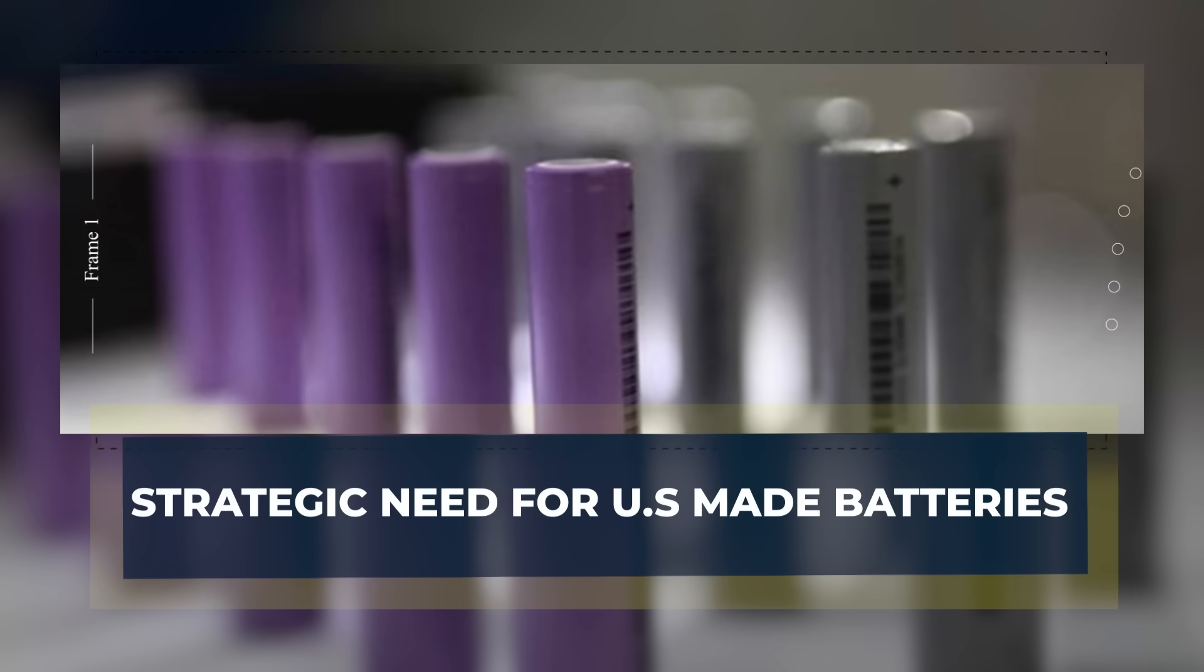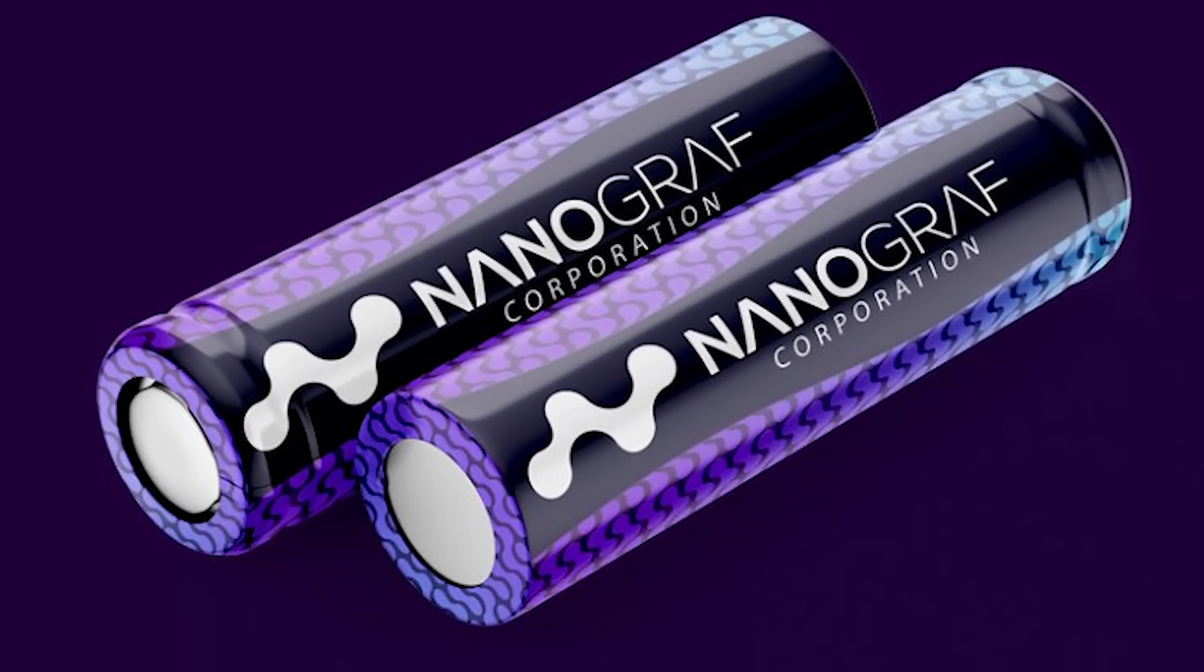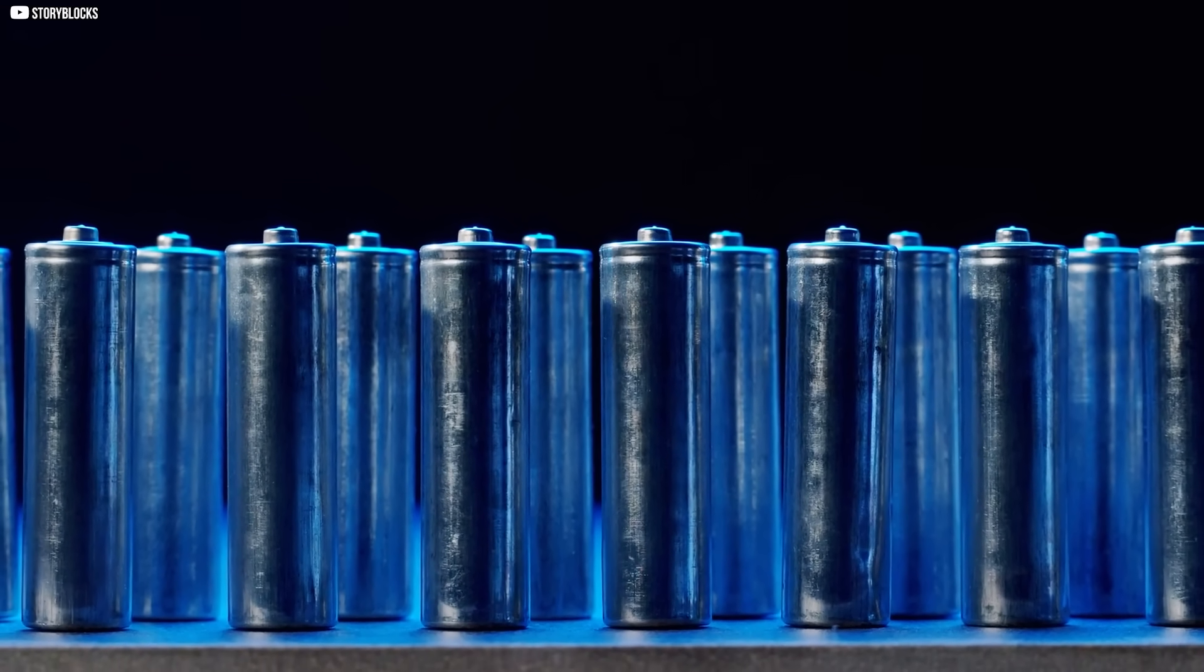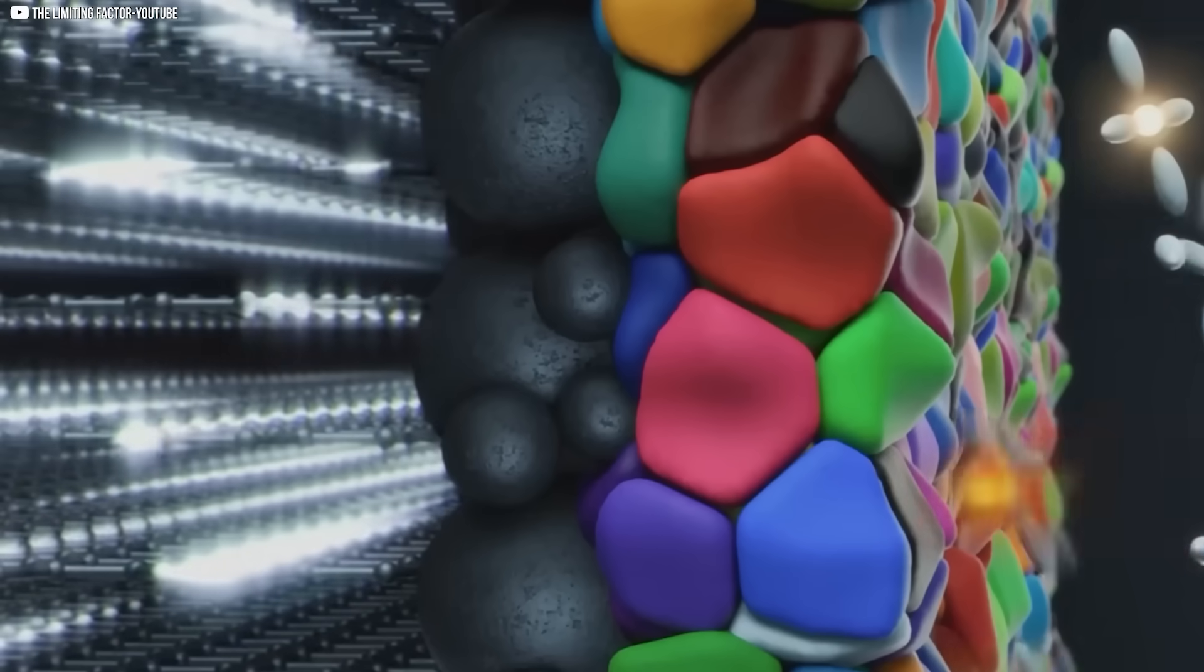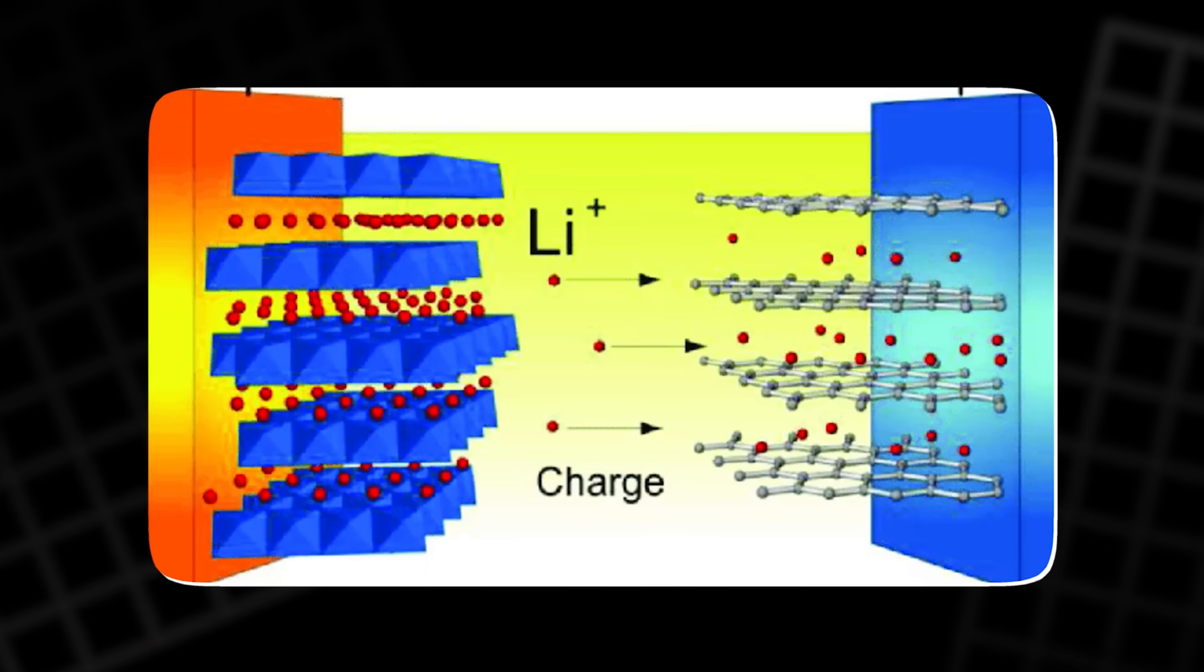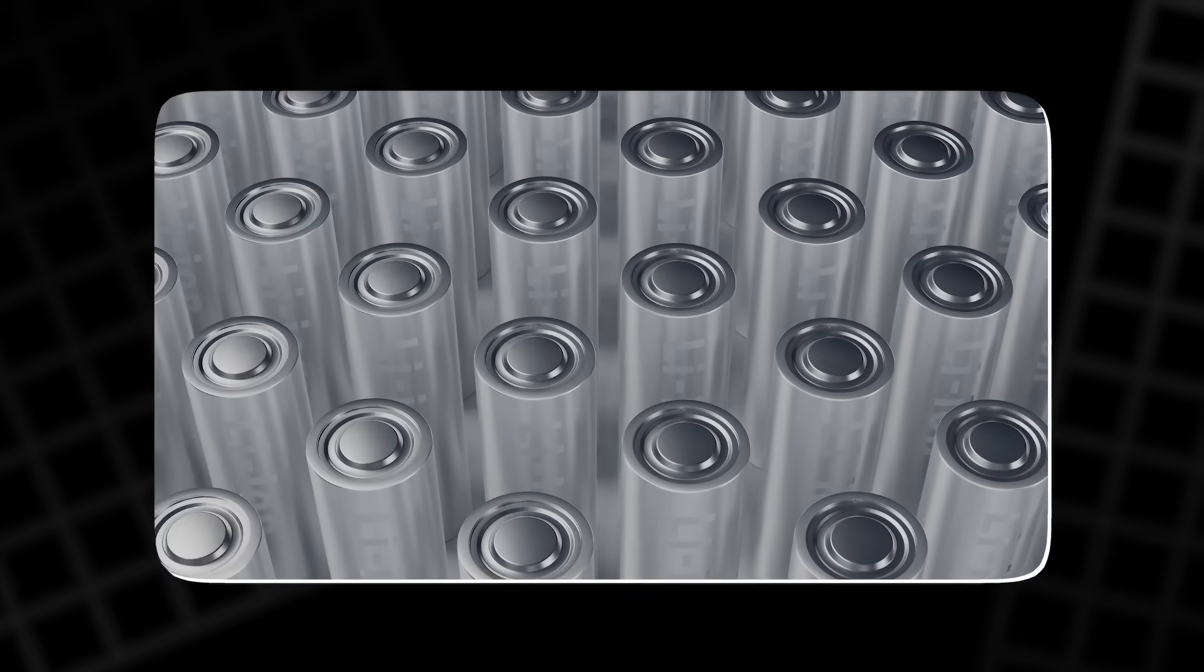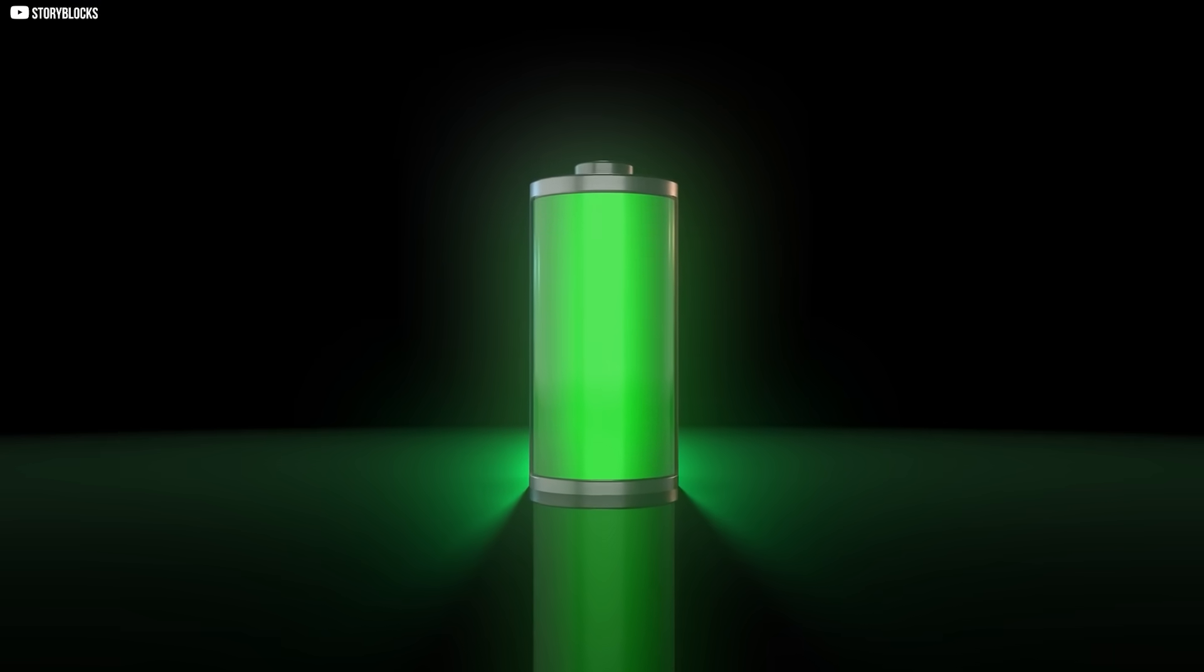To understand what makes Nanograph's battery special, we need to go inside, down to the level where atoms move and energy flows. In a traditional lithium-ion battery, graphite is used in the anode. Its layered structure allows lithium ions to slide between sheets during charging. It's simple and effective, but limited. It can only store a modest amount of energy.